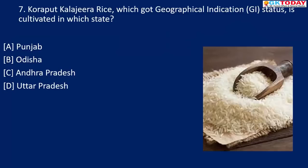Next is Koraput Kalajeera rice, which got the GI status recently, is cultivated in which Indian state? First of all, this variety of rice is known as Prince of Rice and recently got the GI tag. It is indigenous to Koraput district of Odisha state. It has been cultivated for generations by local farmers. It is similar to coriander seeds and is known for its excellent nutritional and cooking qualities. It is grown by the region's tribal communities for thousands of years and is celebrated for its black color and rich taste.